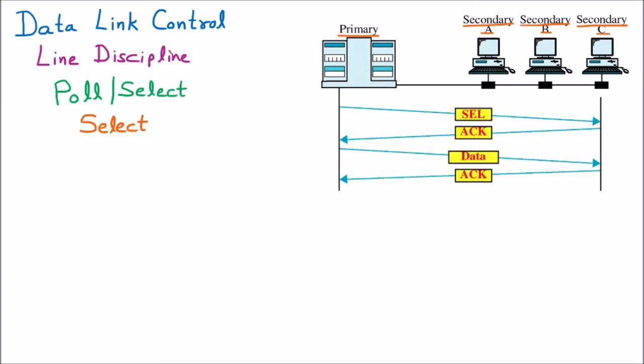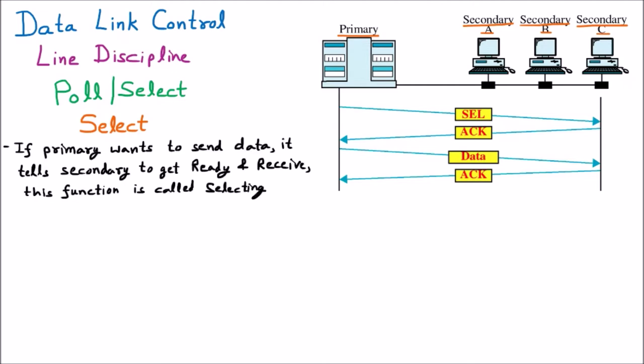Now we are discussing the select function. If the primary wants to send data, it tells the target secondary to get ready and receive. This function is called selecting. We assume the primary wants to send data to secondary C, so the primary will send a message to the secondary: 'Select' — meaning 'Are you ready? I want to send data to you.'